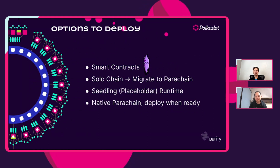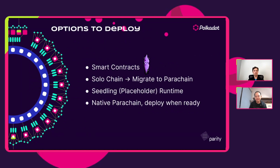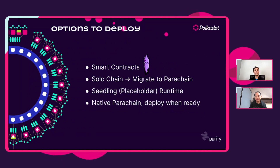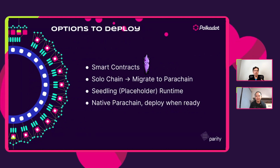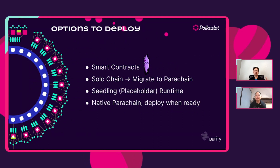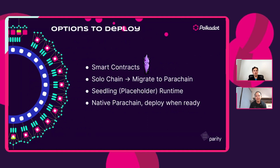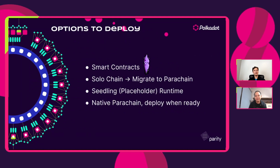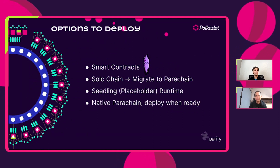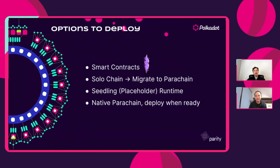Moving on to full chains: there's the idea of deploying a solo chain, meaning it is not connected to Polkadot and has no shared security — all security needs to come from your own chain. Once you are ready, you can always migrate to a parachain later. There's also a less commonly used option called a seedling runtime — essentially a placeholder runtime, sometimes used for solo chains migrating to parachains. If you want to win a specific auction slot but your runtime is not ready yet, you can win the auction with a seedling runtime as a placeholder, then perform a runtime upgrade from your seedling to your full runtime.